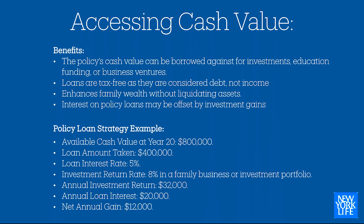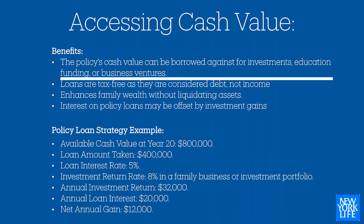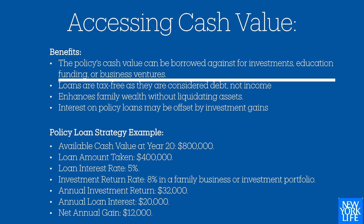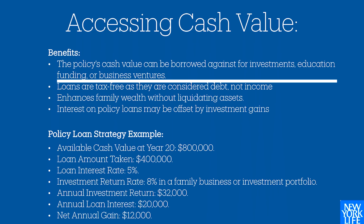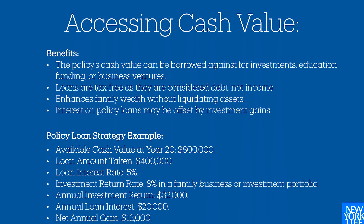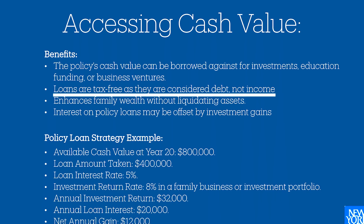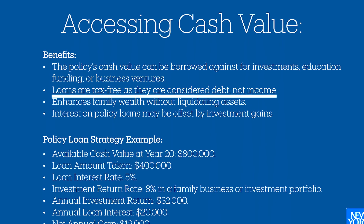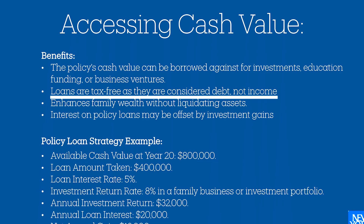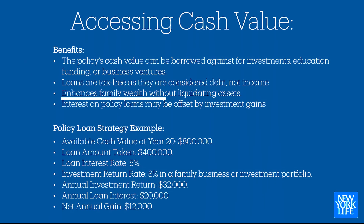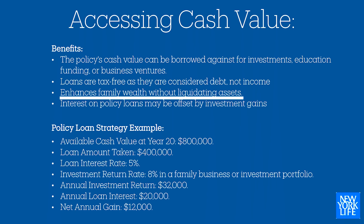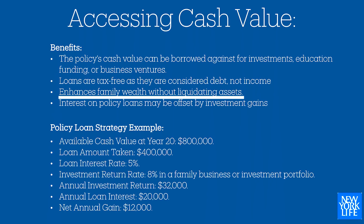Now let's talk about accessing the cash value — some of these numbers come from New York Life. The policy cash values can be borrowed against for investment, education, funding, or business ventures. Loans are tax-free as they're considered debt, not income, and specific to life insurance, it doesn't affect your debt-to-income ratio. It's also not a loan you have to qualify for. This allows access to those dollars as income-tax-free, enhancing family wealth without liquidating assets — you don't have to sell other assets to get money.